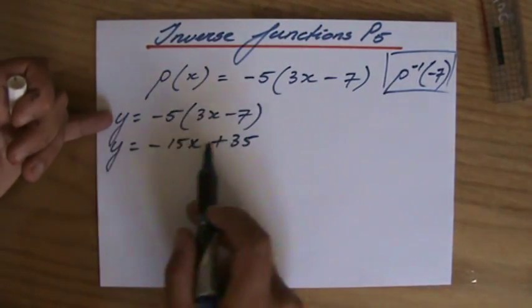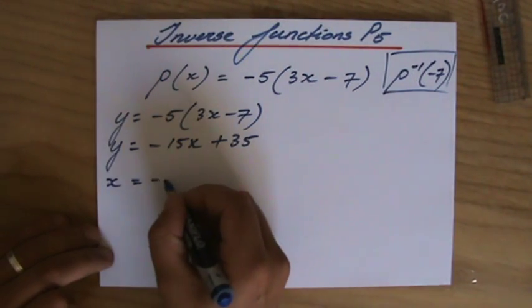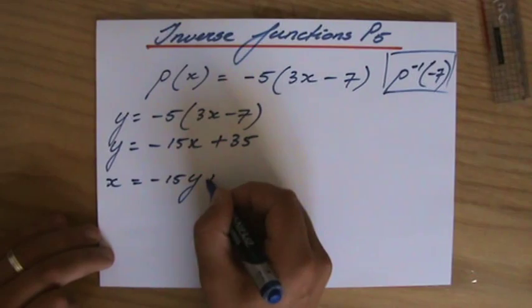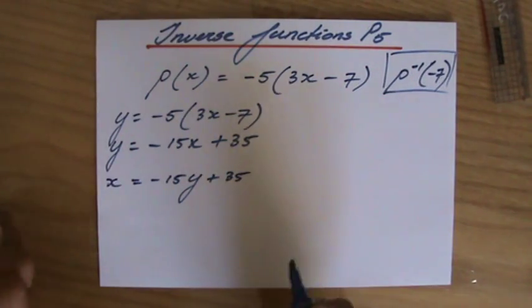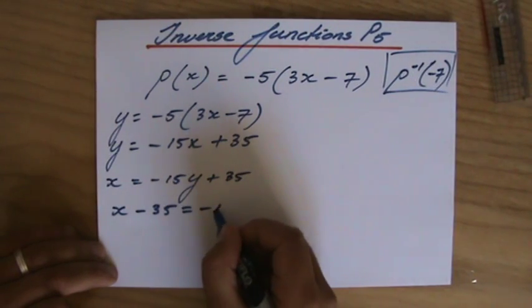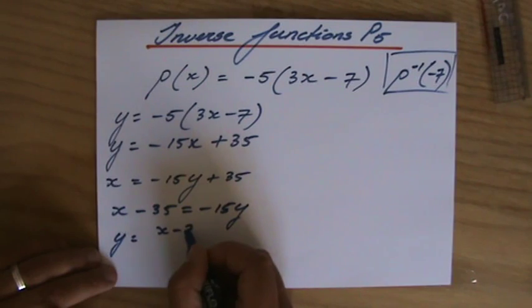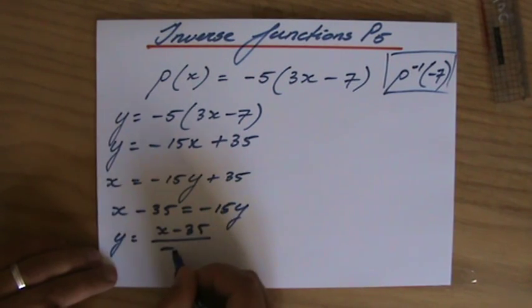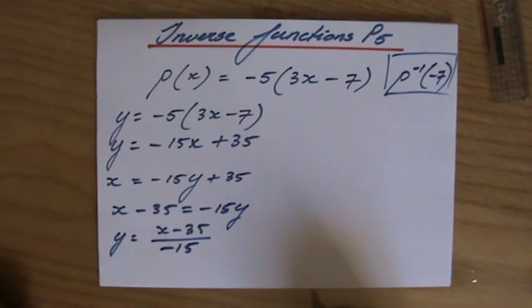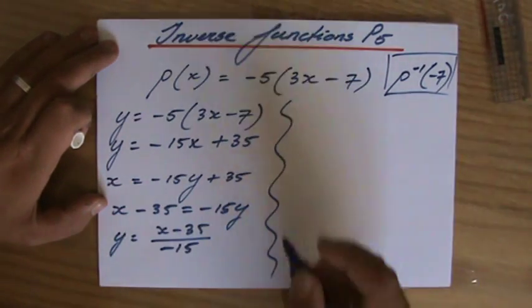Now to find the inverse, I swap x and y: x = -15y + 35. Then I make y the subject again. x - 35 equals -15y, so y equals (x - 35) over -15. That's the inverse function.